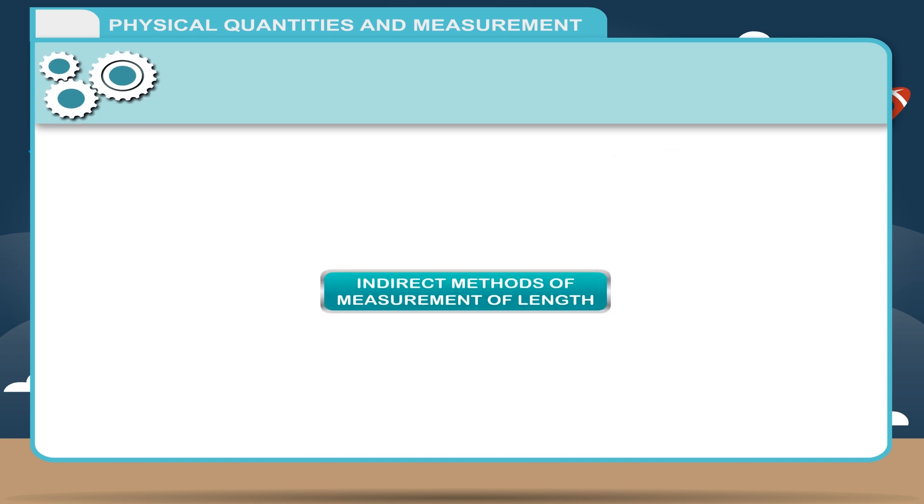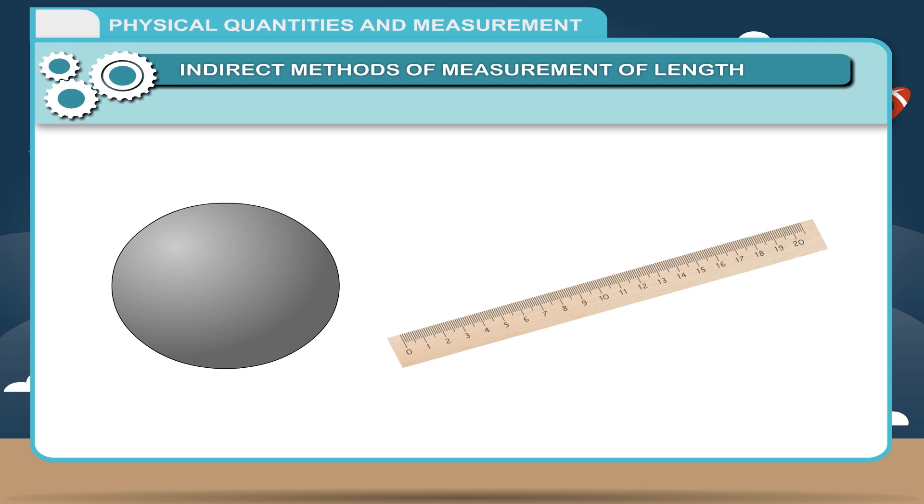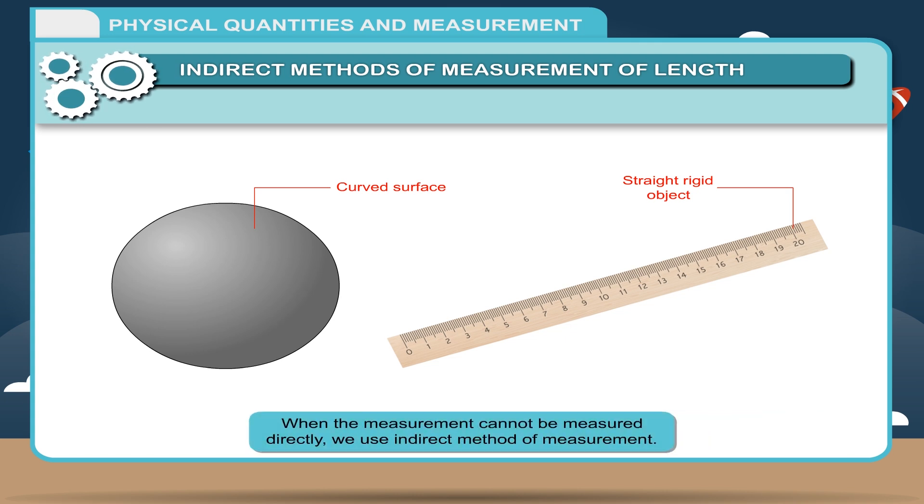Indirect methods of measurement of length: A ruler cannot be used to measure the circumference of a cylinder because the circumference is a curved surface and a ruler is a straight rigid object. Therefore, we cannot bend the ruler around a curved object. When the measurement cannot be measured directly, we use indirect method of measurement. For this, the measurement system has to be modified. Let us perform the following activities to understand how we can measure the length using indirect methods.